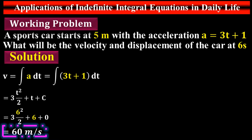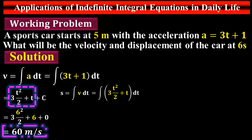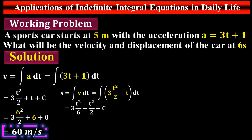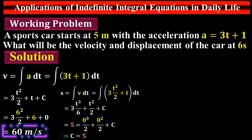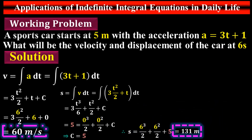Now to find the displacement after 6 seconds: displacement equals the integral of velocity, where v = (3t²)/2 + t. Integrating gives (3t³)/6 + (t²)/2 + C. Substituting the initial condition s = 5 at t = 0, we find C = 5. Substituting t = 6 with C = 5, the displacement after 6 seconds is 131 metres.